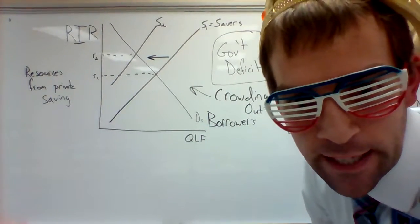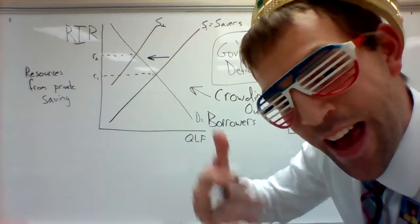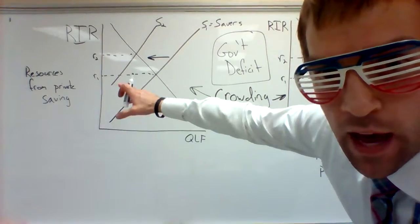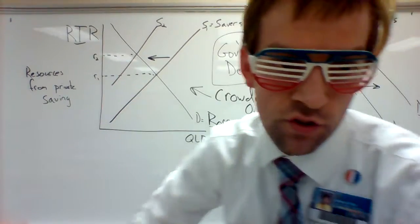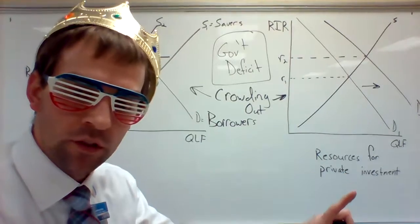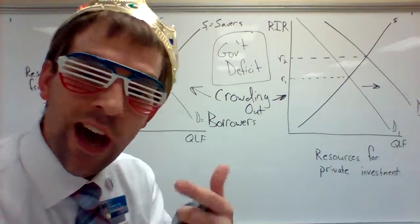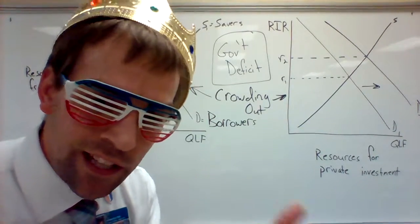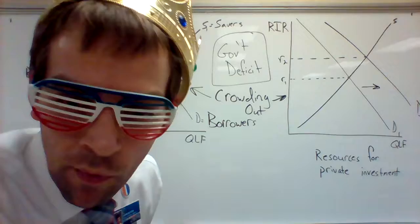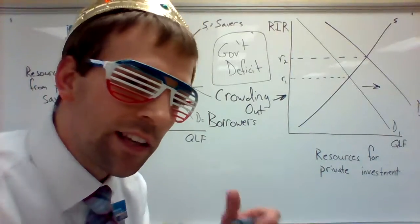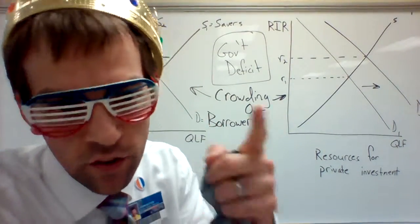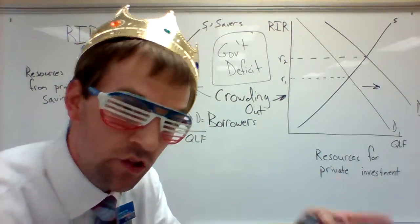Crowding out just slowed down the amount of investment that would happen because we got a higher real interest rate in both cases, depending on how we look at those dollars. How do you deal with this? How do you know which one to do on the test? Most of the time on the test, they'll say, in this situation, how does the demand for loanable funds change?